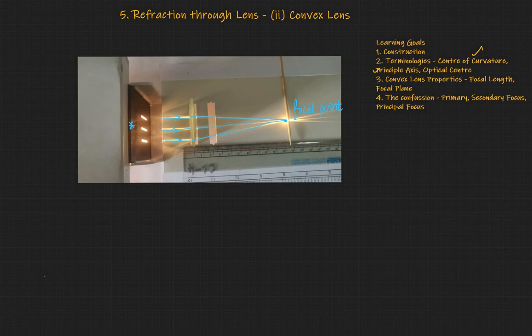For all these convex lenses, they have a particular focal point. For rays that enter parallel, they meet at a point, and that point is the focal point. The length from the lens to that point is what we call the focal length. In this particular case, the focal length is 10.5 centimeters.